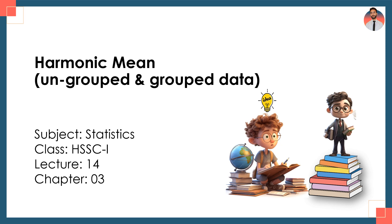Bismillahirrahmanirrahim. Students, I hope you all are doing well. In previous lectures I discussed two types of averages: the arithmetic mean and the geometric mean. In this lecture, lecture number 14 of chapter number 3, our third topic is the harmonic mean for ungrouped and grouped data. Harmonic mean is normally used for average speed.